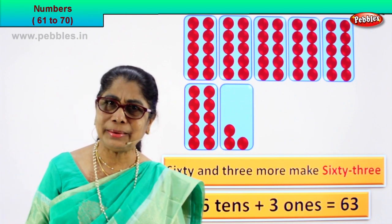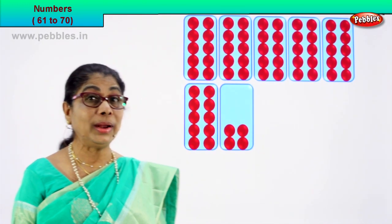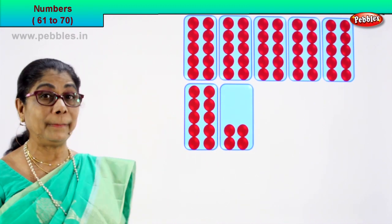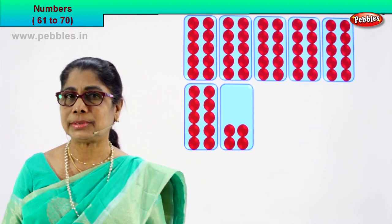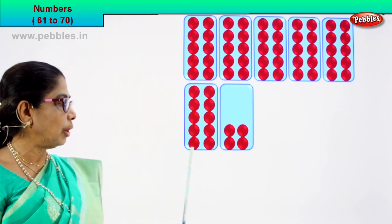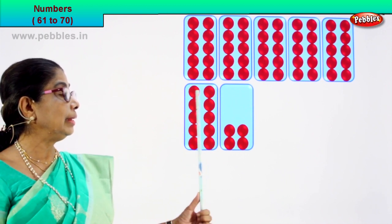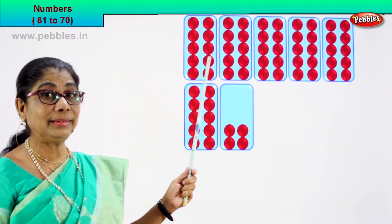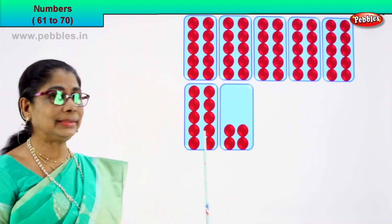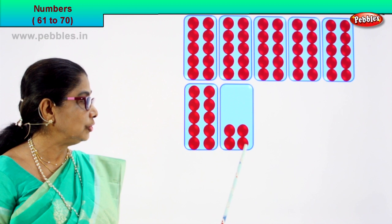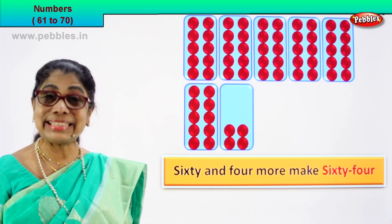Shall we take the next number? We are learning to count in tens and ones and finding the numeral and number name. Let's count the number of boxes. One, two, three, four, five, six. There are six boxes. And each box how many? Let's count this box. One, two, three, four, five, six, seven, eight, nine, ten. So there is one ten, two tens, three tens, four tens, five tens, six tens. Six tens and four ones. That is sixty-four.